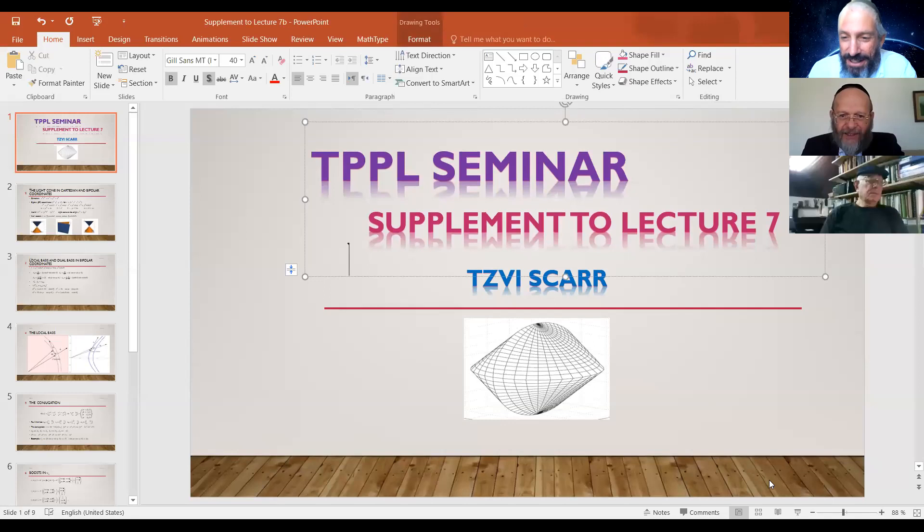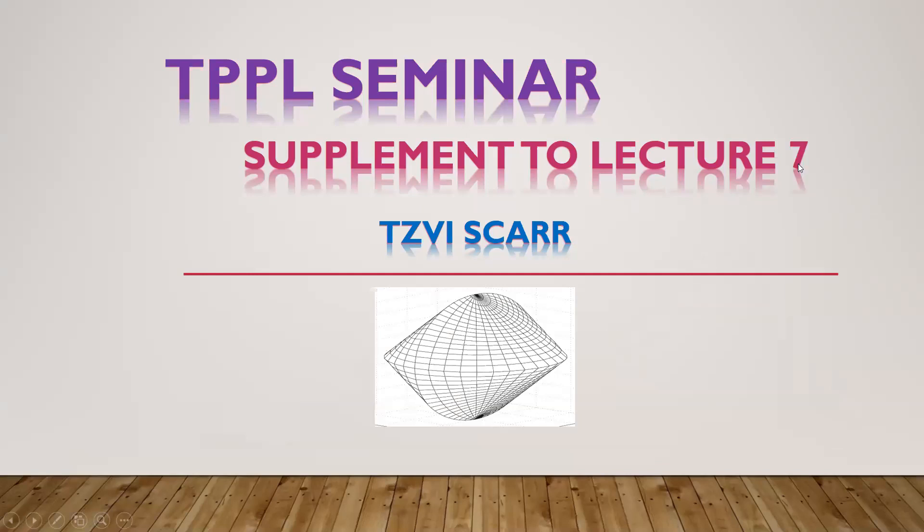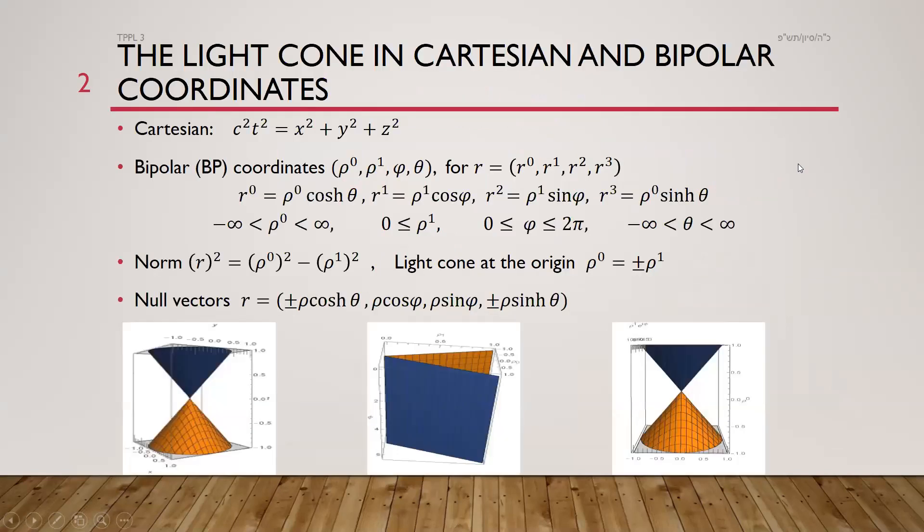Okay, you can see the presentation, yes? Okay, very good, so let's start. The first thing we want to talk about is the light cone and different sets of coordinates. The usual Cartesian coordinates, so the equation for the light cone is when the Minkowski metric is zero, so c squared t squared equals x squared plus y squared plus z squared.